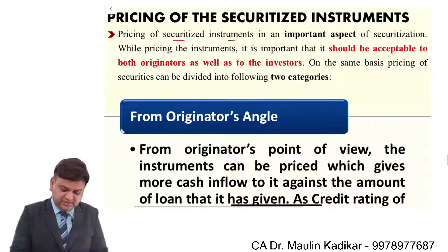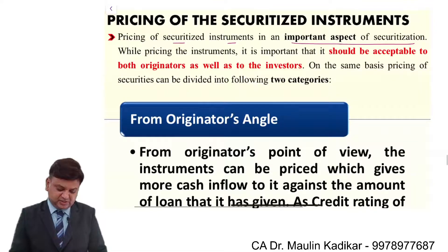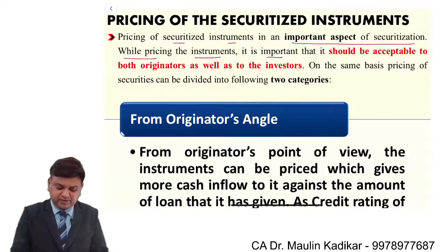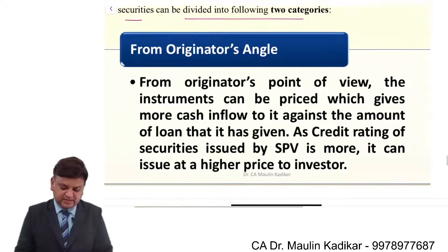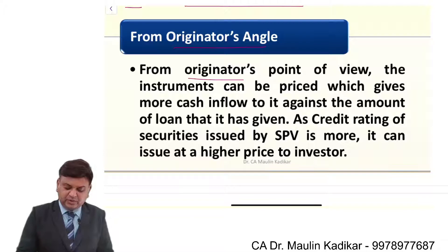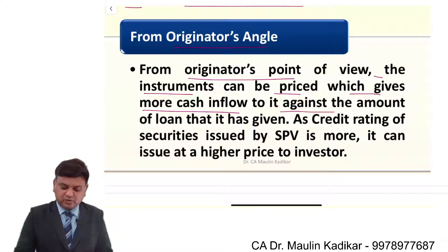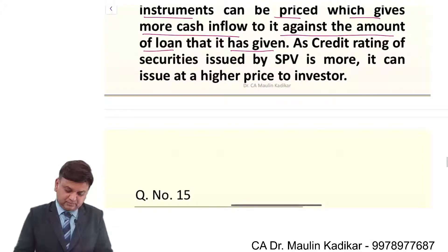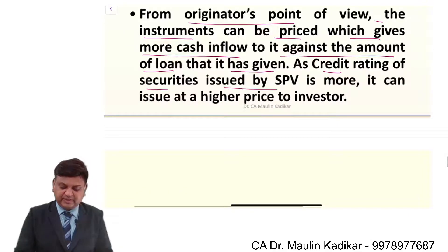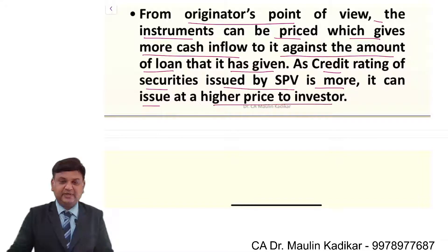Pricing of the securitized instruments is an important aspect of securitization. While pricing the instruments, it is important that it should be acceptable both to the originator — that is the bank — as well as to the investor. On this basis, pricing of the securities can be divided into two categories. From the originator's point of view, the instrument can be priced in a way that gives more cash inflow against the amount of the loan it has given — that is more than Rs. 1 lakh, say Rs. 1 lakh 30,000 as a hypothetical figure. As the credit rating of the securities issued by the special purpose vehicle is higher, it can issue at a higher price to the investor.